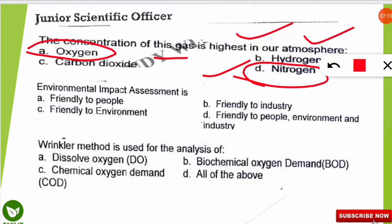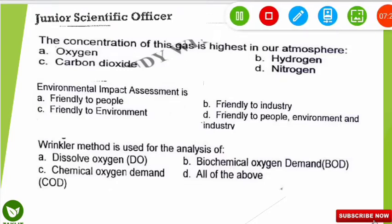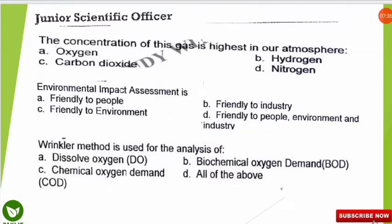The next question is related to EIA. The question is: the Environmental Impact Assessment (EIA) is friendly to whom? The correct option is that EIA is friendly to all three aspects — people, environment, and industry. That's why we should always go for an EIA before any project.